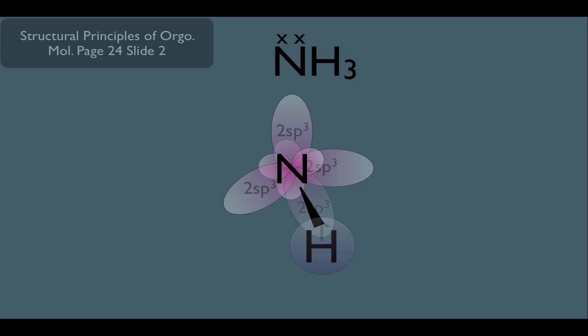This would also be true for all the other NH bonds. For instance, for this sp3 hybridized orbital, it'll head-on overlap with the s orbital for the hydrogen. That would create another sigma bond. And the same is said for the third hydrogen.